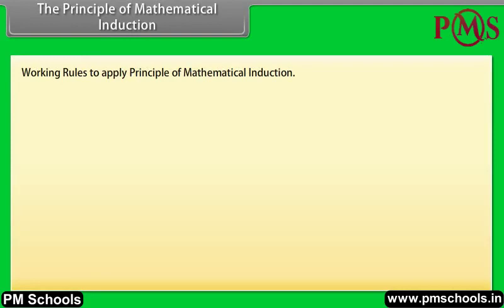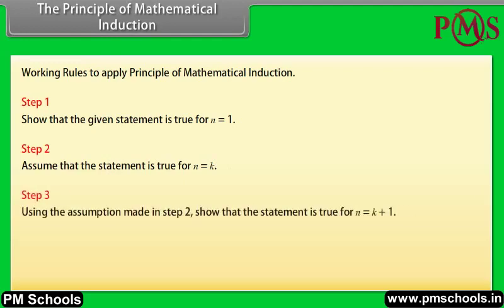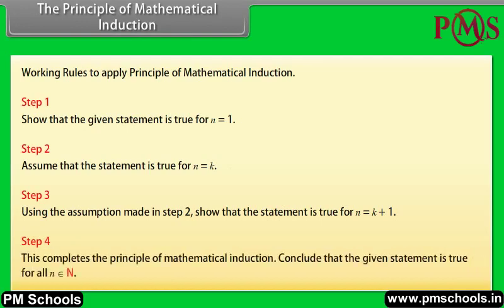Working rules to apply the principle of mathematical induction. Step 1: Show that the given statement is true for n = 1. Step 2: Assume that the statement is true for n = k. Step 3: Using the assumption made in Step 2, show that the statement is true for n = k + 1. Step 4: Conclude that the given statement is true for all n belonging to capital N.